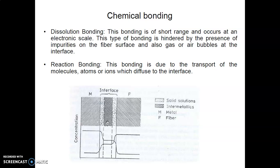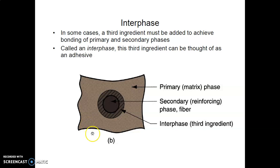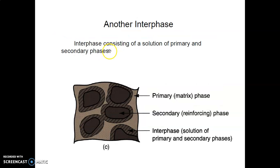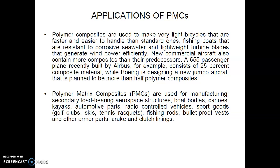Reaction bonding is due to the transport of molecules, atoms, and ions which diffuse into the interface. In some cases, a third ingredient — called the interface or interphase — must be added to achieve better bonding between the primary and secondary bonding phases.